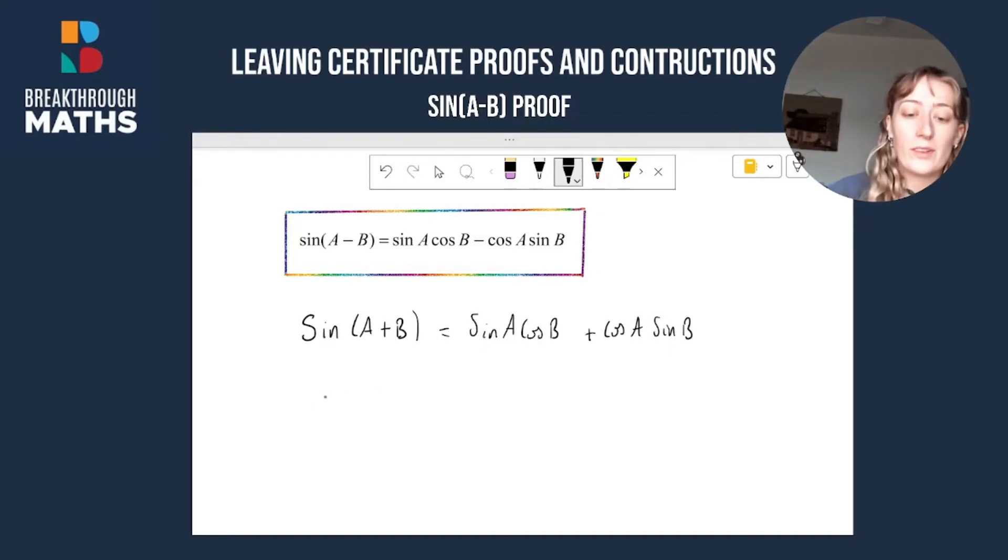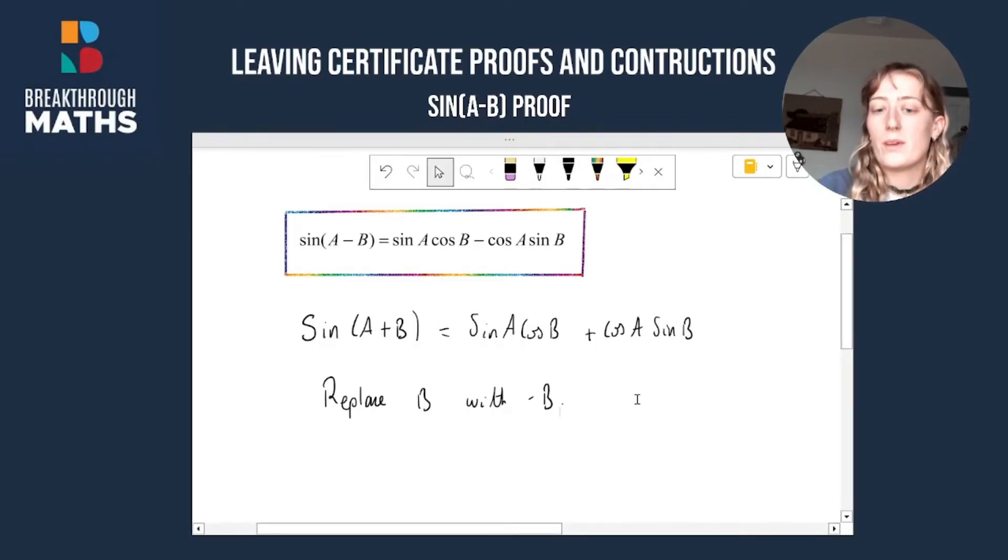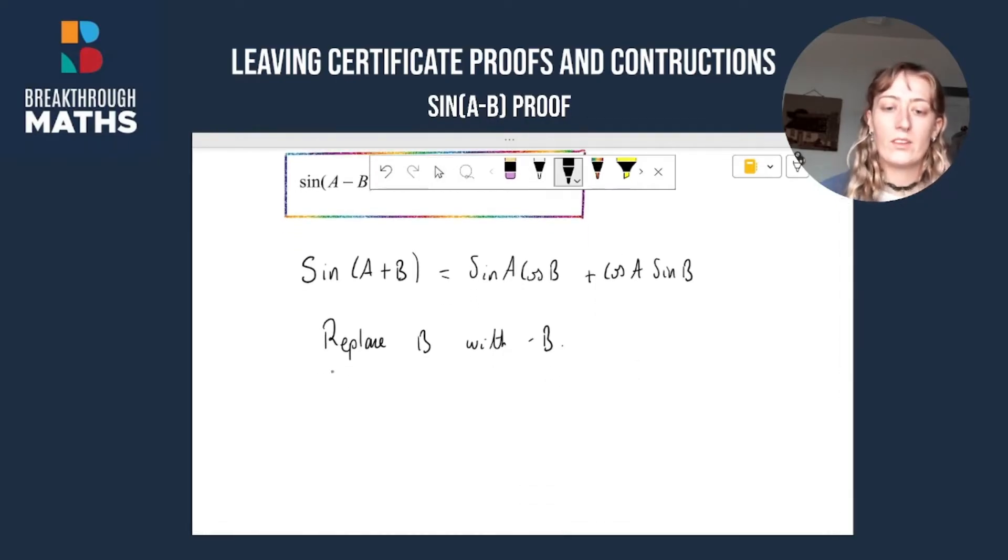Now the next thing we're going to do is everywhere we see a B, we're going to replace it with a minus B. Okay, so replace B with minus B. And this is totally fine to do that because it's like arbitrary labeling. Okay, we can just label it as minus B instead of B, and that's okay.